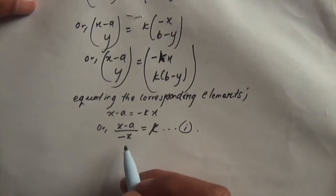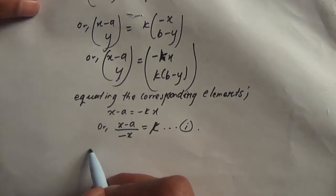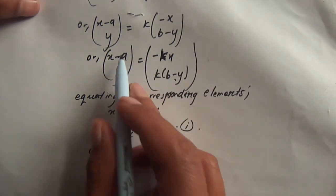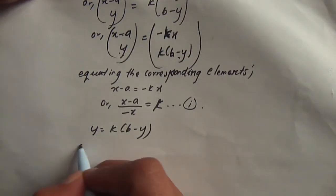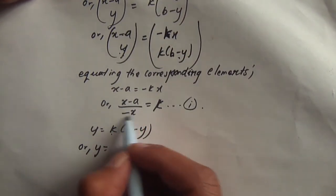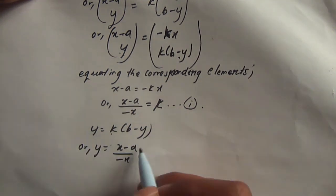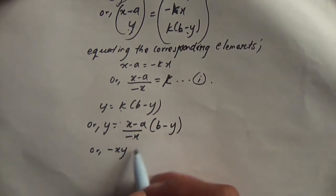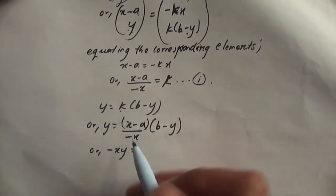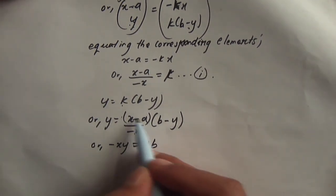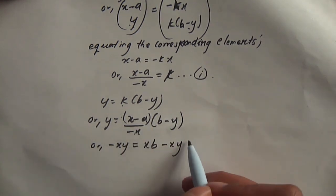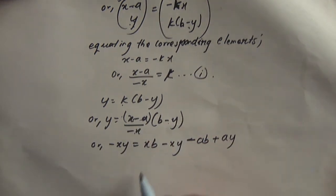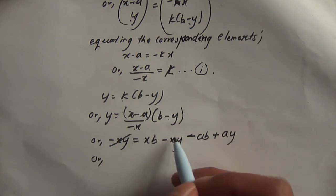So the value of k — from corresponding elements, y equals k(b minus y). From x minus a by minus x equals k, and from the y-component, cross-multiplying gives: x minus a by minus x equals y by (b minus y), and cross-multiplying: (x minus a)(b minus y) equals minus xy.